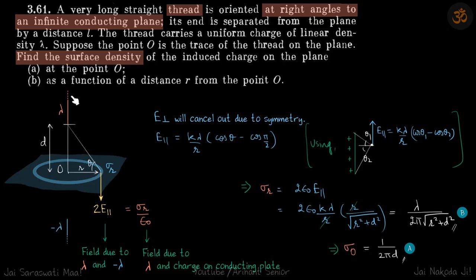Because of this wire, you will have E perpendicular and E parallel, and because of this wire, you will have E perpendicular inside and E parallel downwards. You can see that E perpendicular from both planes will get cancelled out and you will eventually have two times E parallel.